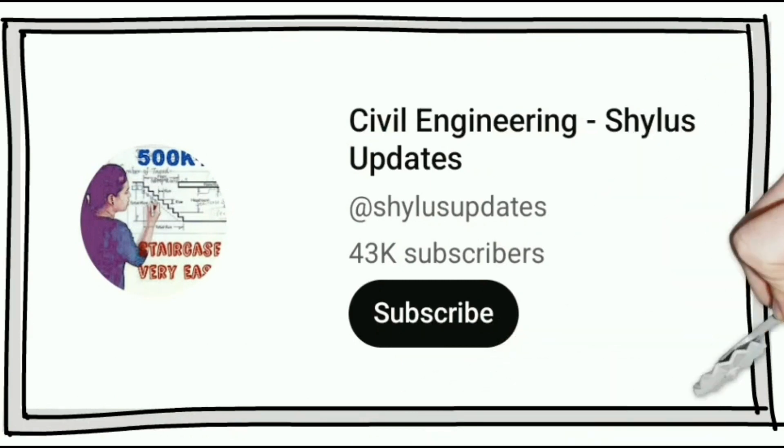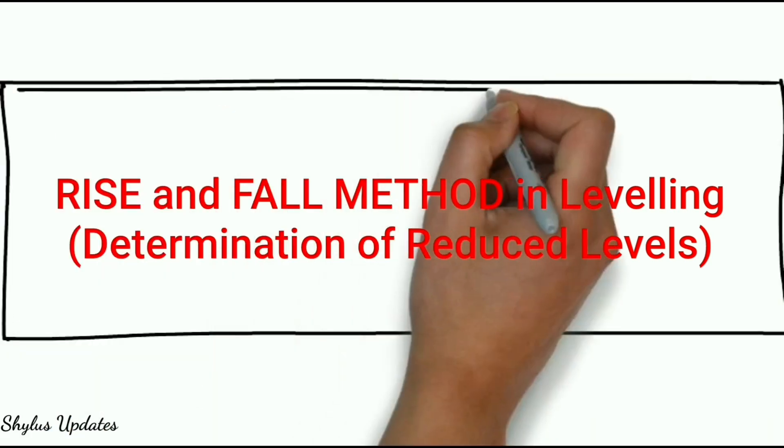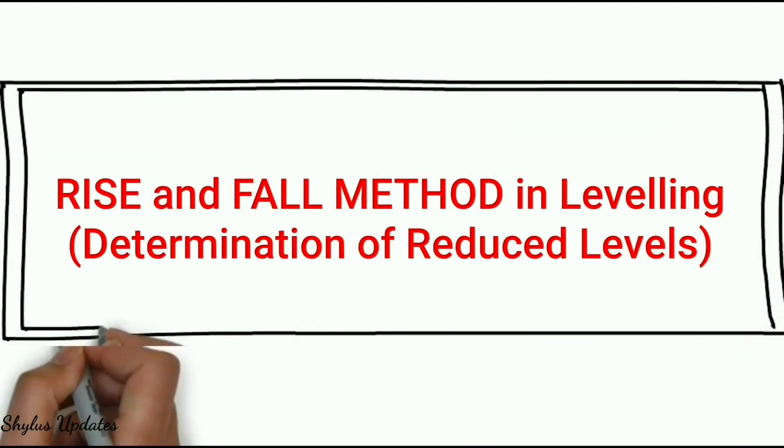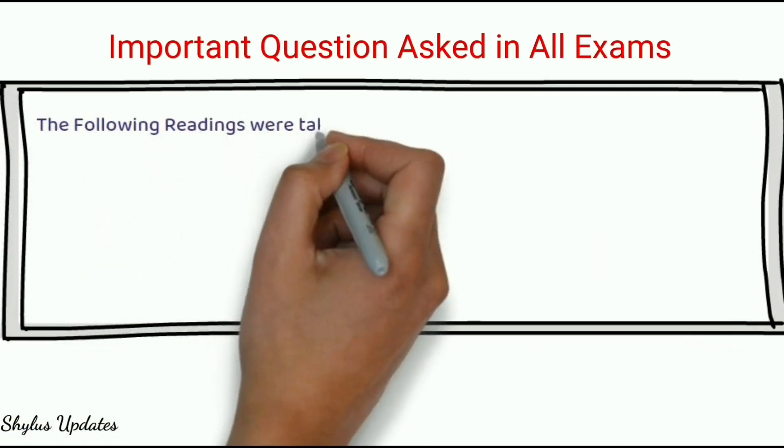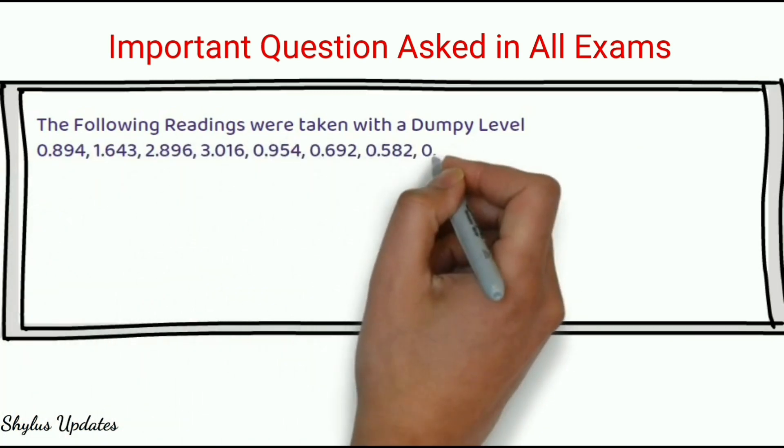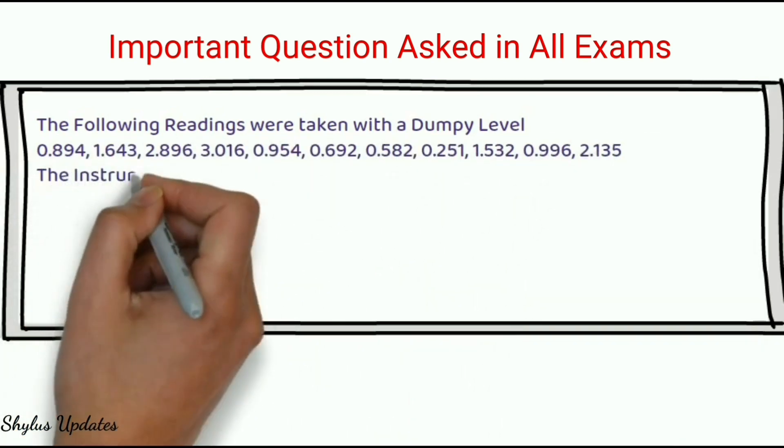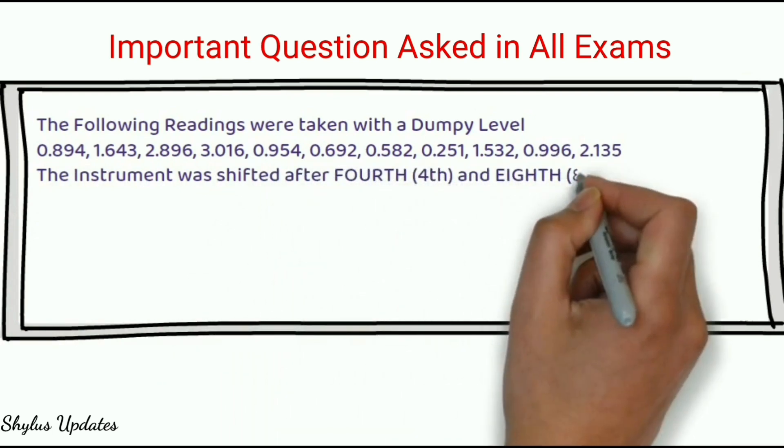In this video, we are going to learn table solution of rise and fall method in leveling, that is determination of reduced levels. The following readings were taken with a dumpy level. The instrument was shifted after fourth and eighth readings.